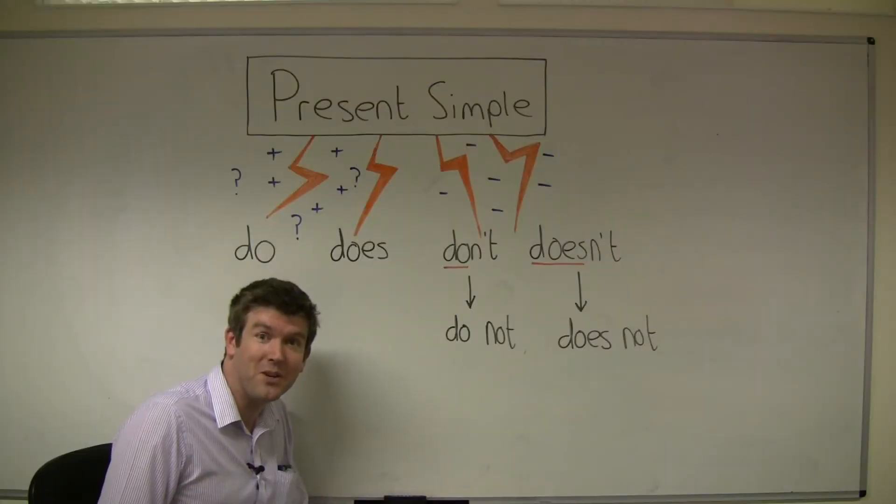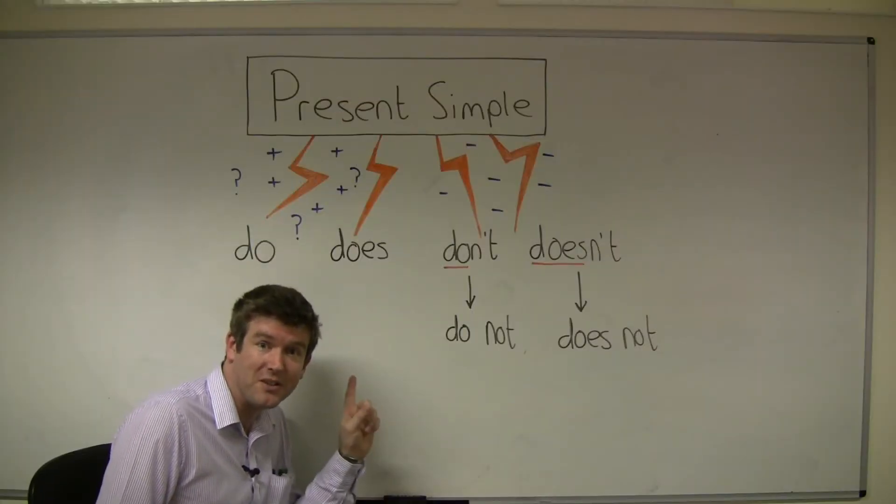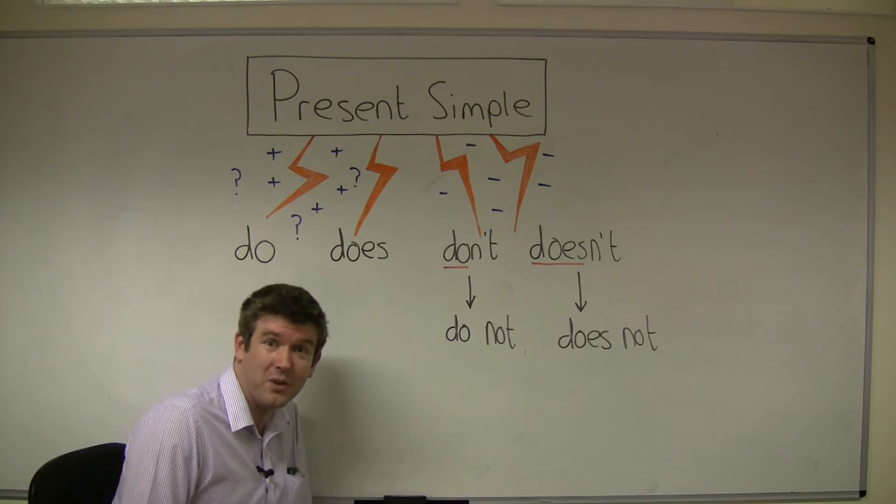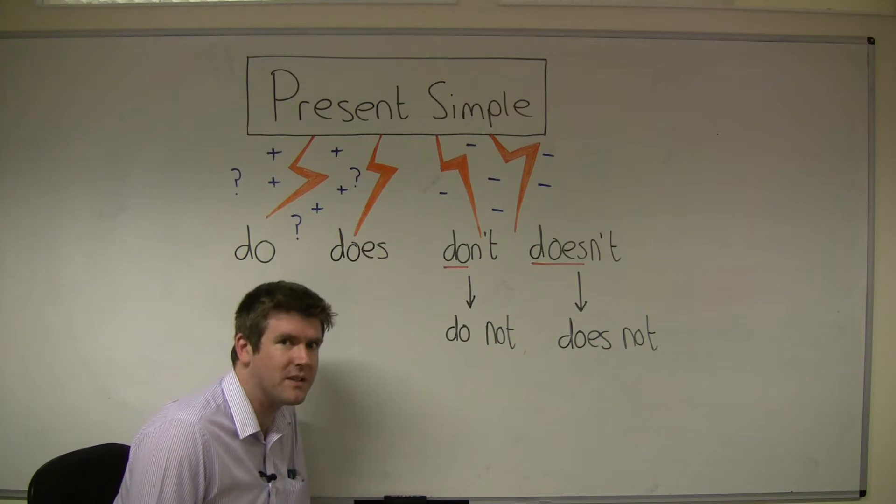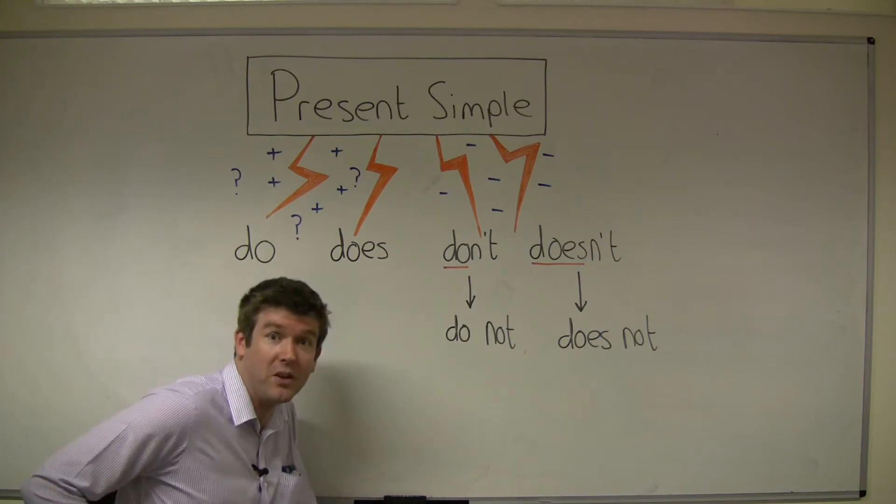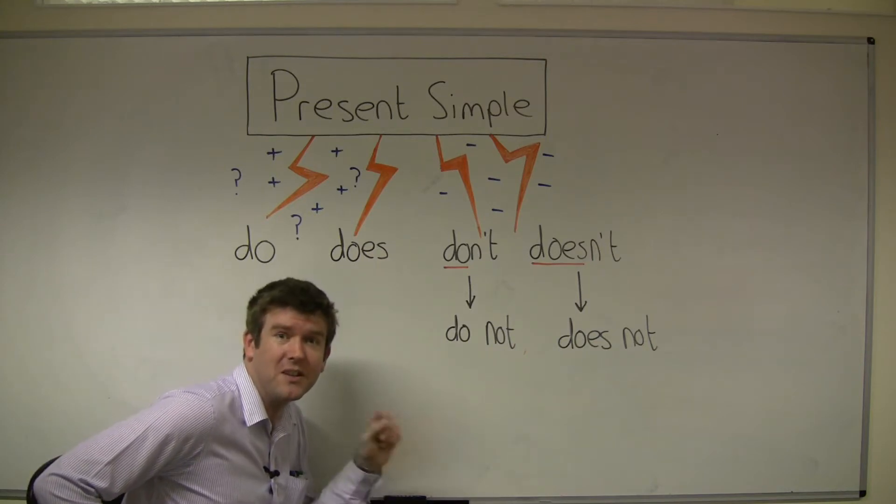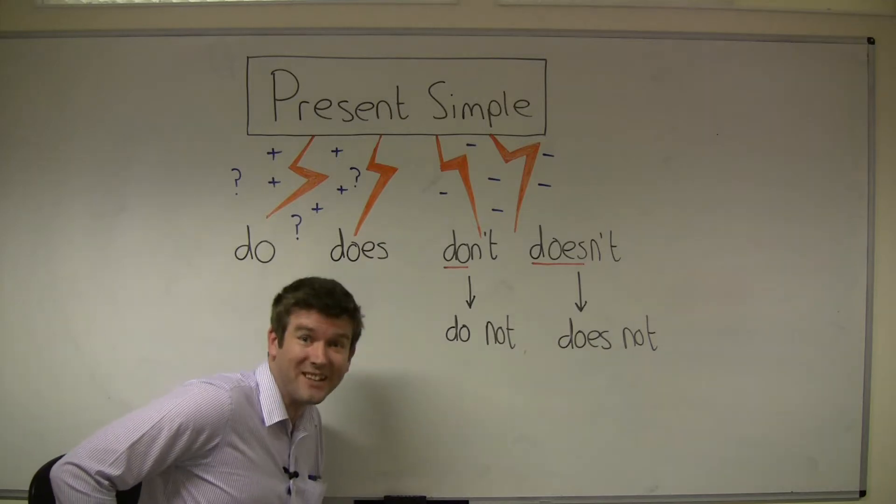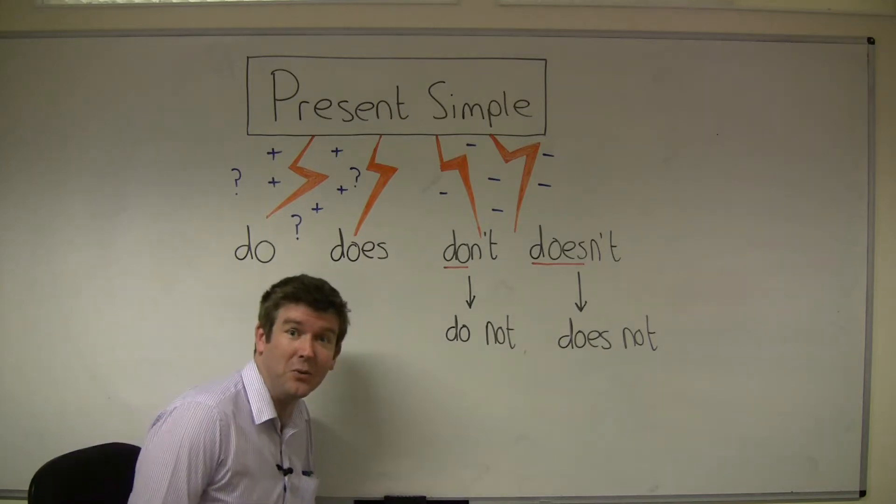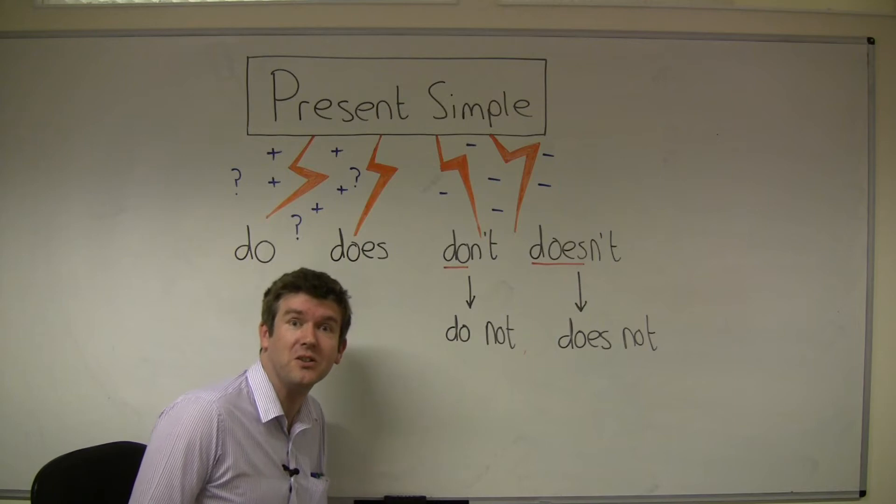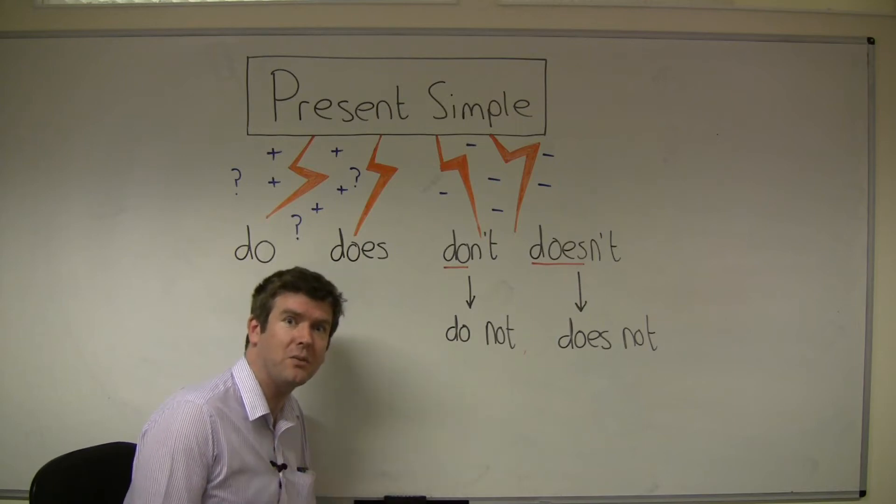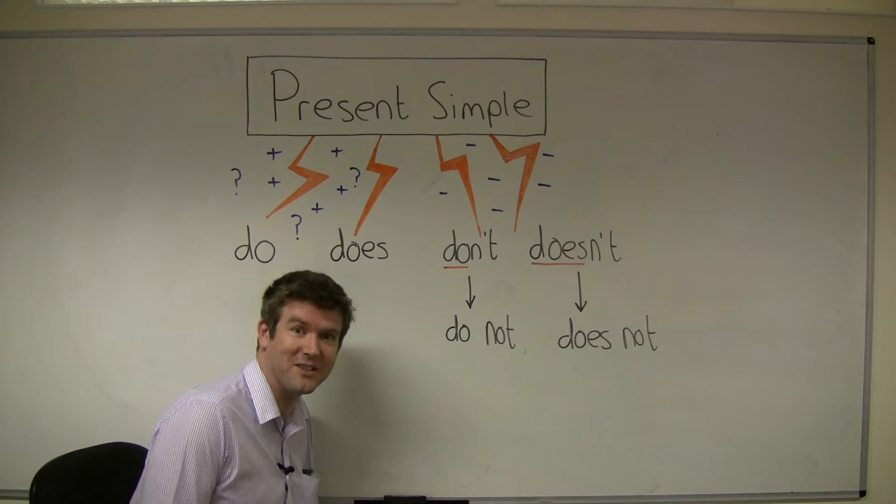With the present simple we usually use do and does. We usually use these words with questions, sometimes with positive sentences. We also have don't and doesn't. These are always used in negative sentences. Don't is do not, doesn't is does not. But when we speak we usually say don't and doesn't.